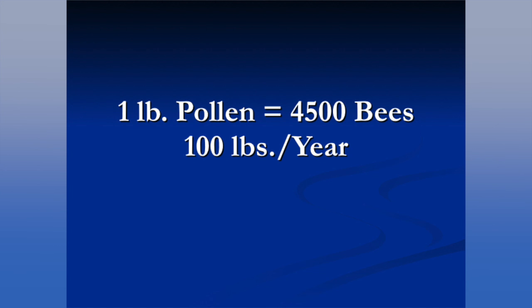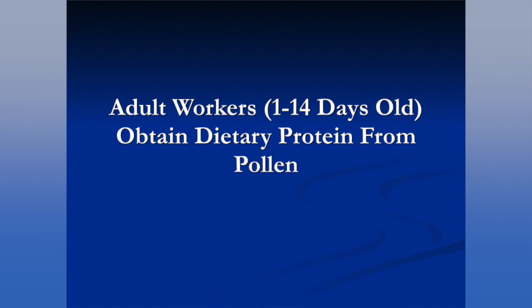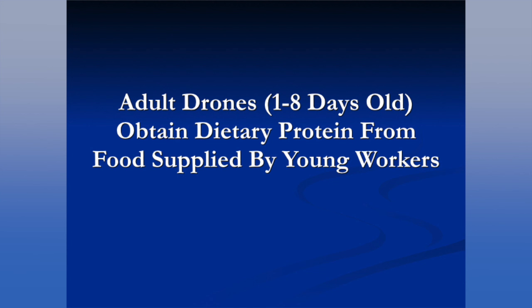It takes about a pound of pollen to produce 4,500 bees, so we're talking about another 100 pounds of product acquired each season. Adult queens obtain protein from royal jelly fed to them by nurse bees throughout their egg-laying life. Adult workers obtain their protein from pollen, which is necessary for development of the hypopharyngeal brood food glands. Drones get their protein from food supplied by young nurse bees — they go around begging for it.